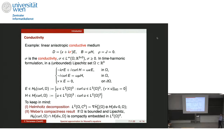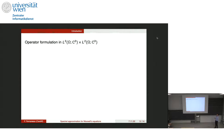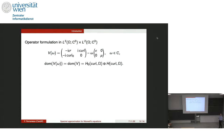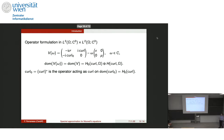We can give an operator formulation to this system by looking at the linear pencil V(omega), where the domain of V(omega) does not depend on omega and is H0-curl direct sum H-curl. The curl-zero here is the operator acting as the differential expression curl on H0-curl. This is a trivial pencil because, since this matrix is invertible, you can rewrite it as an operator and the spectrum does not change.